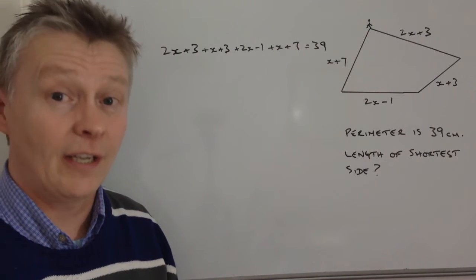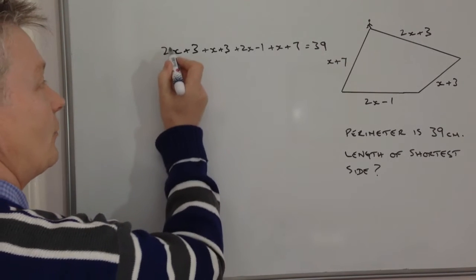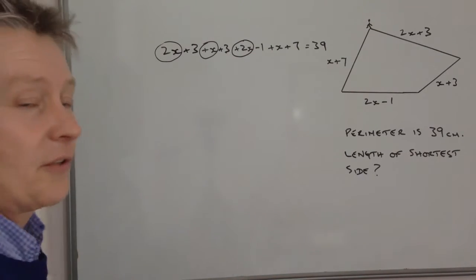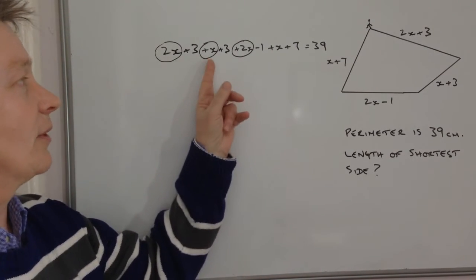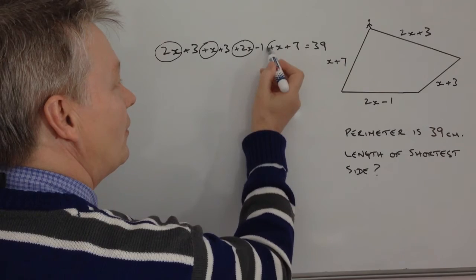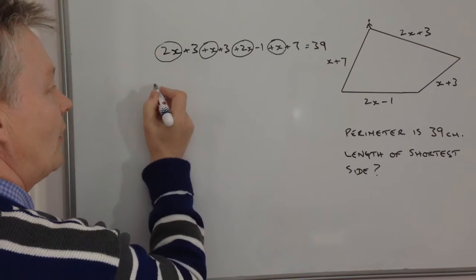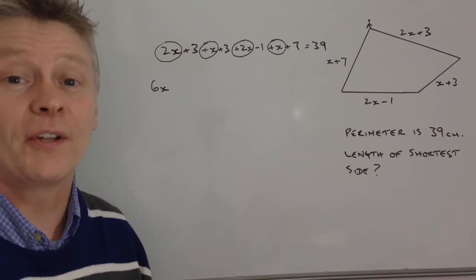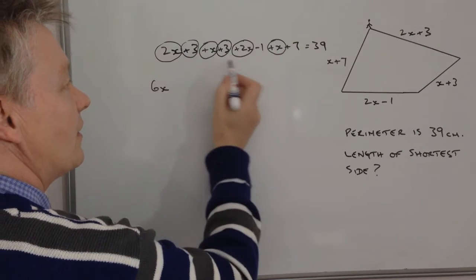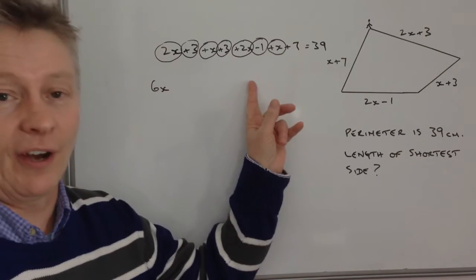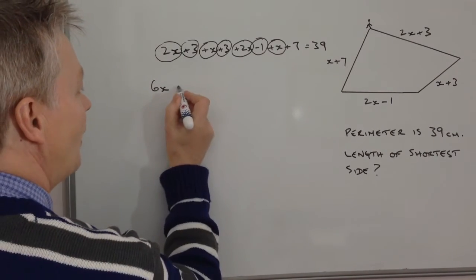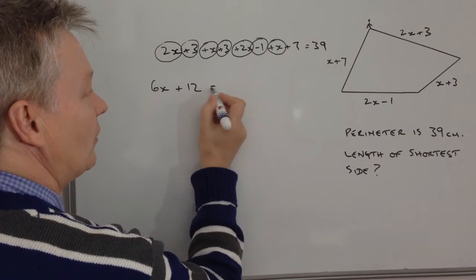So what we're saying is that we've got 2X here, an X there, a 2X there. So if we add those together so far, we've got 2X plus X is 3X plus 2X is 5X. Then we've got another X there. So in total we've got 6X, and then we need to add up the numbers themselves. So we've got plus 3, 6 minus 1, that's going to be 5, and then we've got plus another 7. So we've got 5 plus 7, that's going to be 12, and that equals 39.